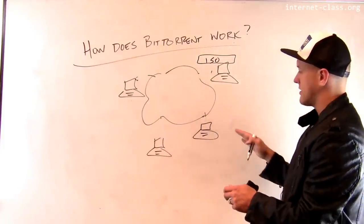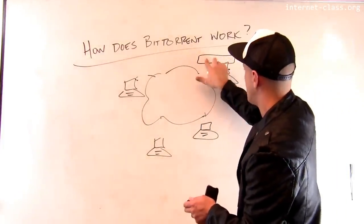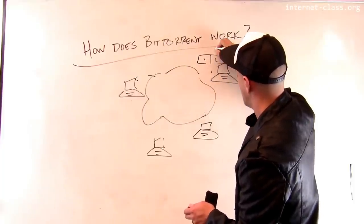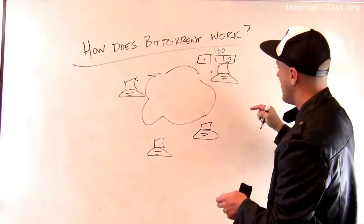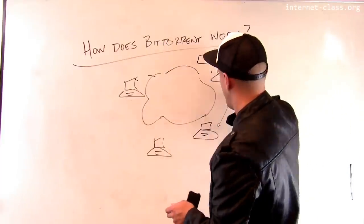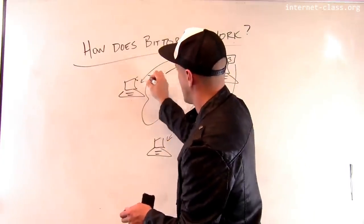And when three other clients start to download it, here's what we're going to do. We're going to break that file up into three pieces. So I'm going to break it up one, two, three. Here's my big file. And this client is going to start to download three first. This client is going to start to download two first. And this client is going to start to download one first.